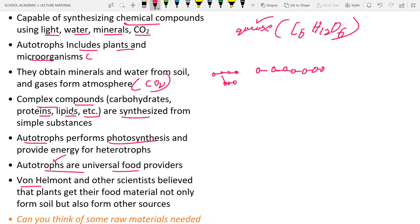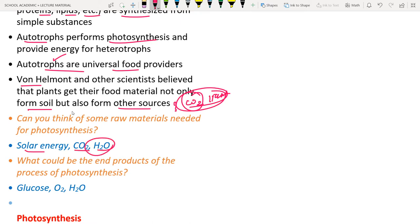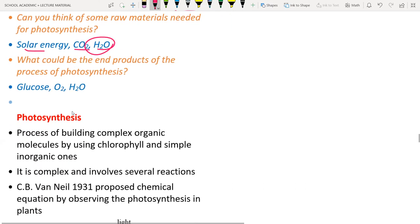Van Helmont and other scientists believed that plants get food not only from the soil but also from other sources — carbon dioxide from the atmosphere, sunlight, and so on. The raw materials needed for photosynthesis include solar energy, carbon dioxide, and water.